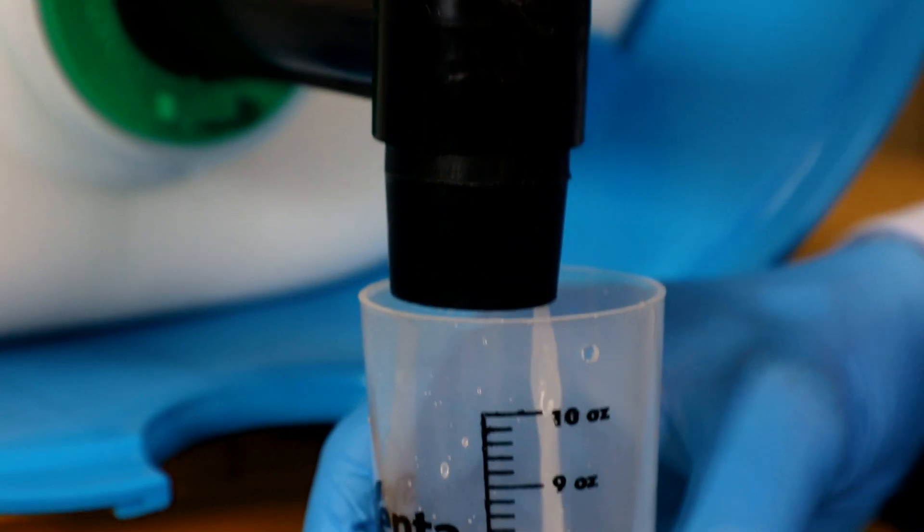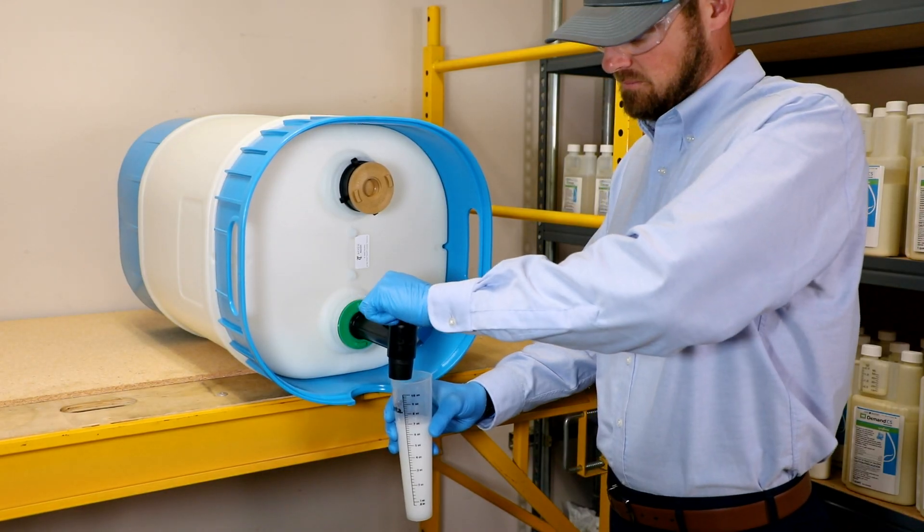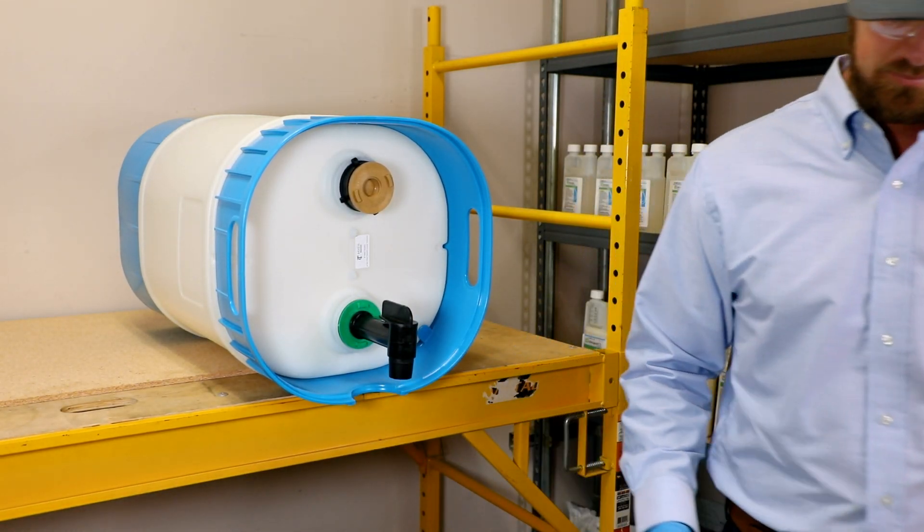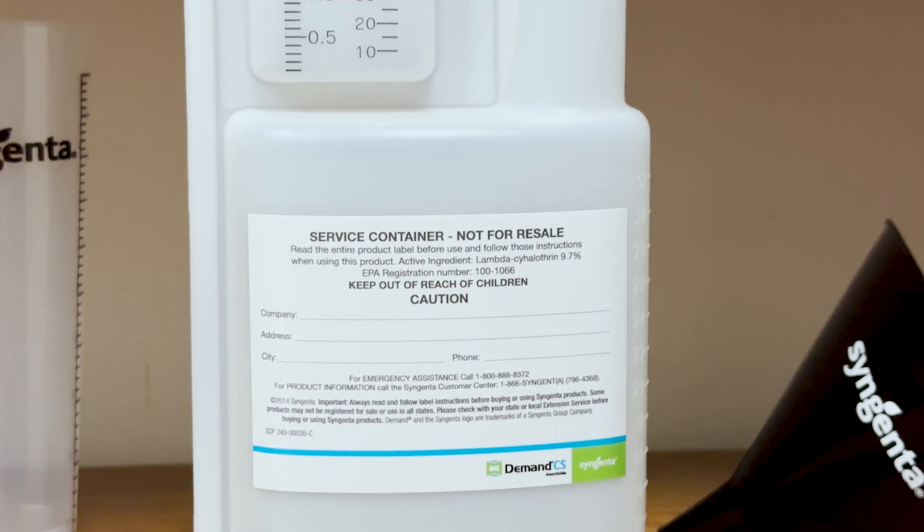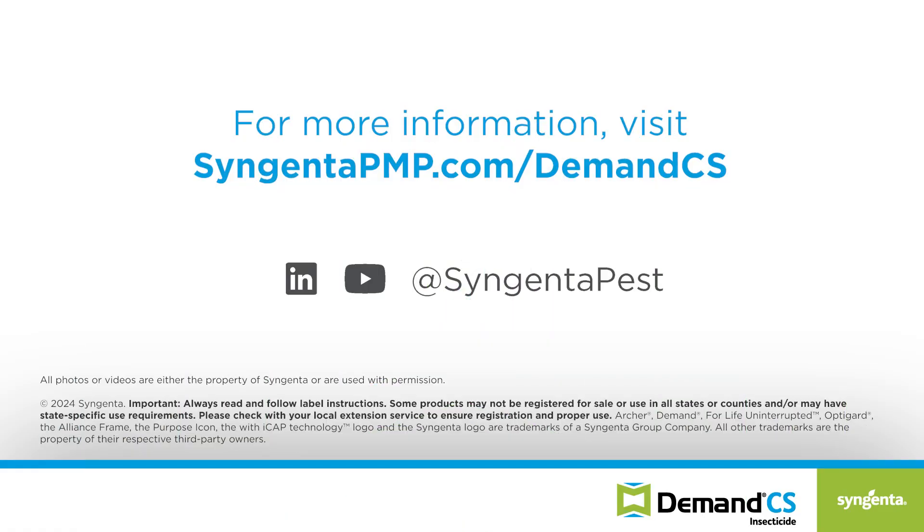To close the valve, turn it back 180 degrees to point toward the drum. Now you're ready to dispense the appropriate amount of product needed for your application into a labeled service container or measuring device. For more information, visit SyngentaPMP.com/DemandCS.